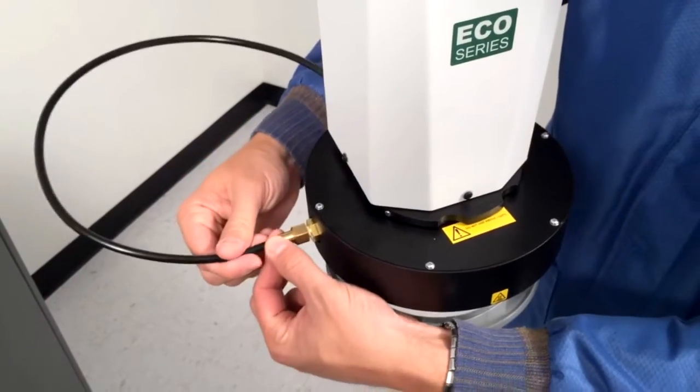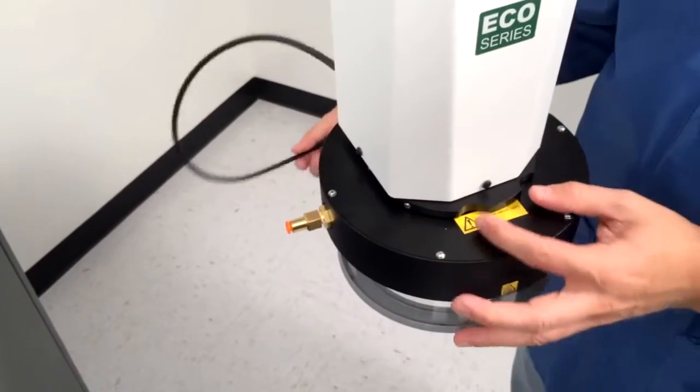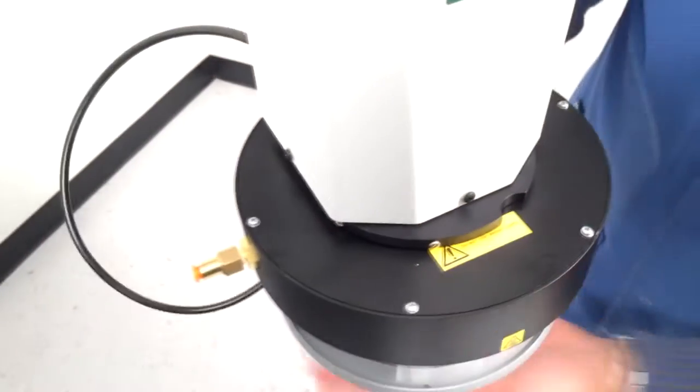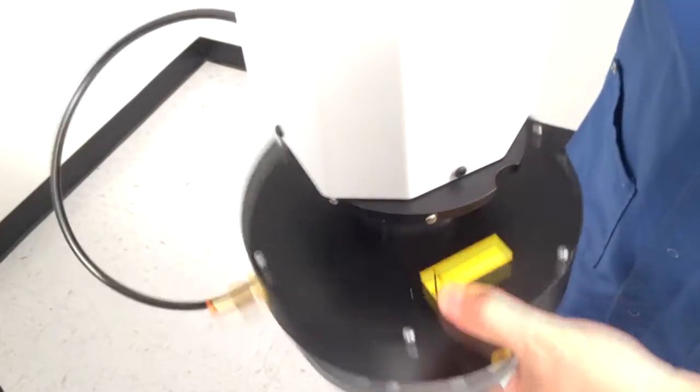To remove the cap, disconnect the purge line, move the quick connect counterclockwise to unlock it, and slide the cap off the nozzle.